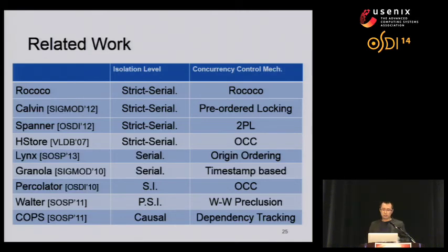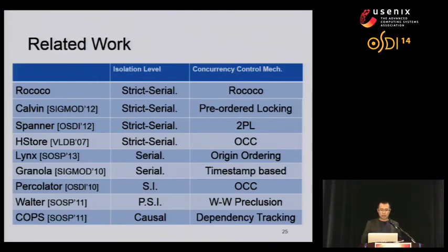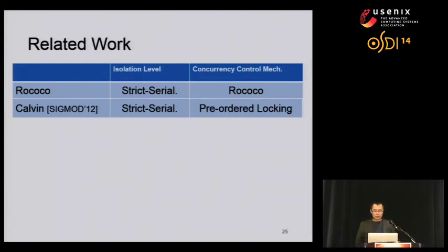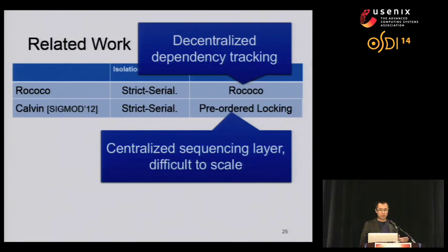Before we end this talk, because this is a very well-studied field, we would like to make a brief comparison with recent works on distributed databases. Because we target strict serializability, this distinguishes us from systems that offer weaker semantics. For systems with strict serializability, Spanner and HStore are based on traditional protocols of two-phase locking and OCC, unlike Rococo which has a novel protocol. As for Calvin, it uses a decentralized sequencing layer to do pre-order locking, which makes it difficult to scale, while Rococo uses decentralized dependency tracking that naturally scales, making the two systems fundamentally different.